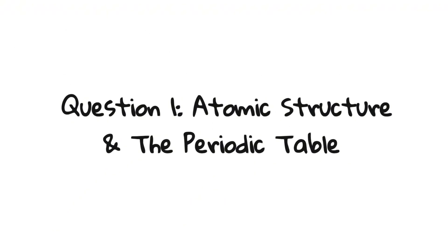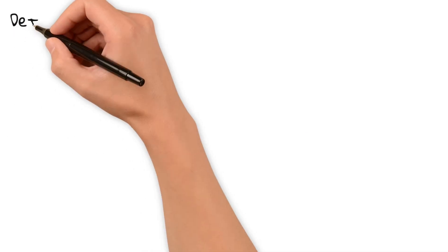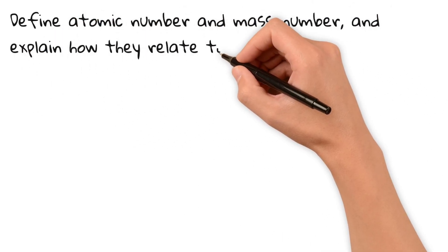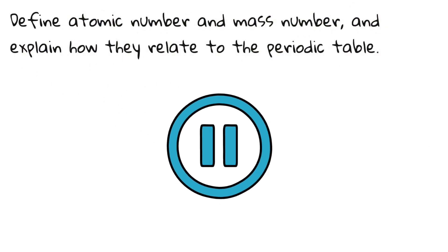Question 1. Atomic structure and the periodic table. Define atomic number and mass number and explain how they relate to the periodic table. Pause the video and give it a try.